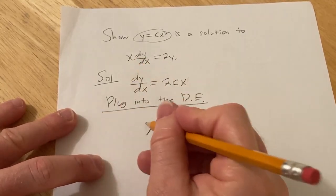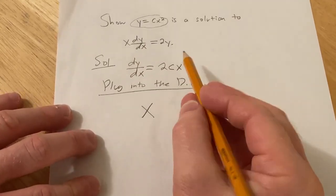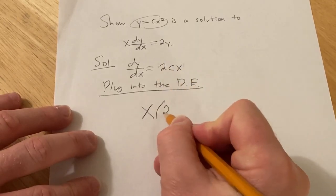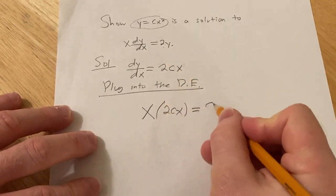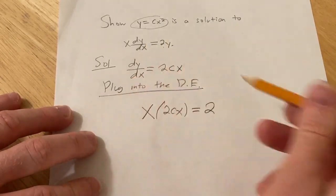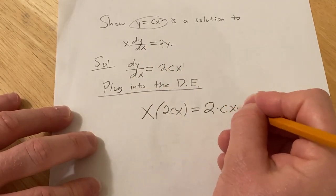So we have x dy dx, we know that's 2cx, equals 2 and then y is equal to cx squared. So times cx squared.